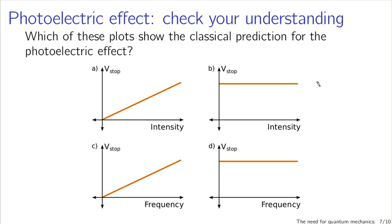Just to briefly check your understanding, consider these plots of stopping voltage as a function of the parameters of the incident light, and check off which you think shows the classical prediction for the photoelectric effect.